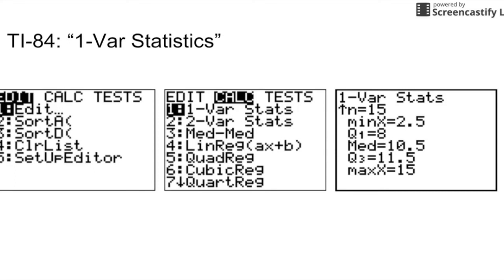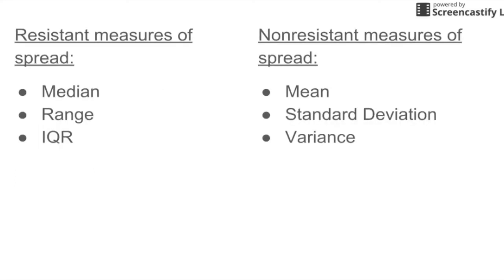Make sure to understand that both the mean and standard deviation are non-resistant measures of spread, while the median and IQR are resistant measures of spread. Take this into consideration whenever you are asked to describe or compare distributions.